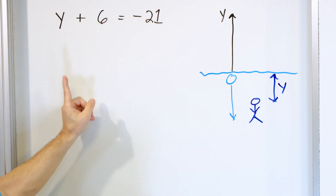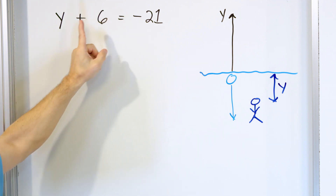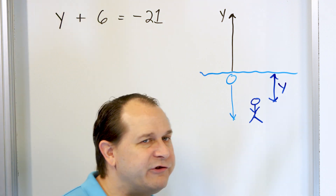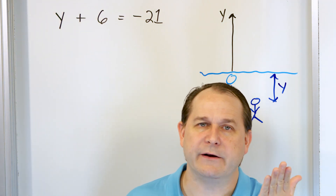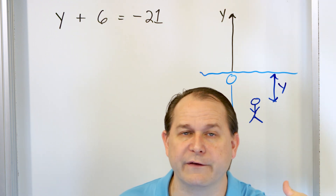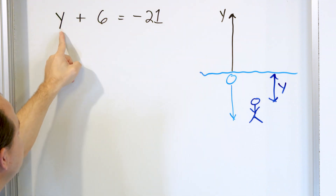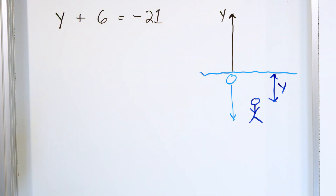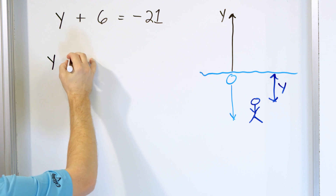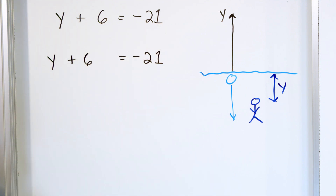It says we swim up 6 units — that's why we're adding 6. We're going up towards the surface and starting off at some position below. So the question is: if you swim up 6 meters and at the end of that you're still 21 meters below the surface, where must you have started swimming from? That would be your initial position y. So let's solve y plus 6 equals negative 21. We want to get y by itself.